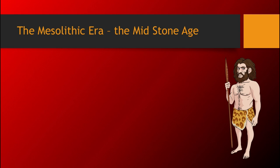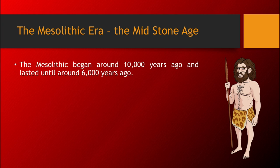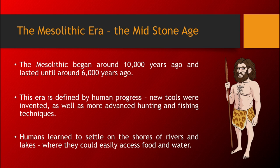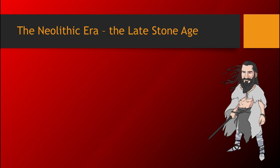The Mesolithic Era, the Mid Stone Age, began around 10,000 years ago and lasted until around 6,000 years ago. This era is defined by human progress. New tools were invented, as well as more advanced hunting and fishing techniques. Humans also learned to settle near the shores of rivers and lakes where they could easily access food and water.